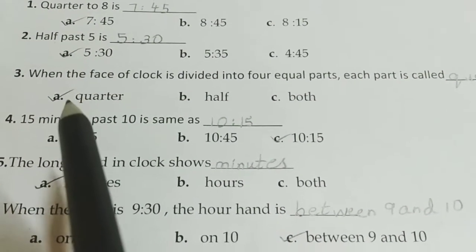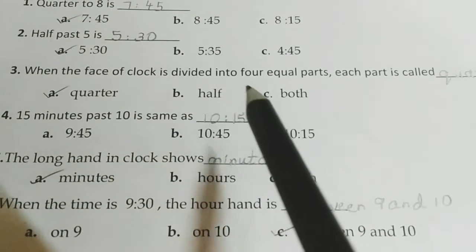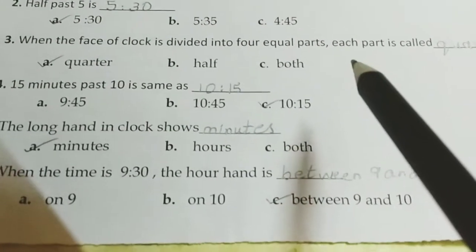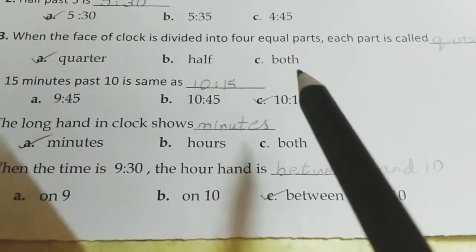Now when the face of clock is divided into 4 equal parts, each part is called. Each part: quarter, half, both.